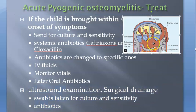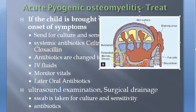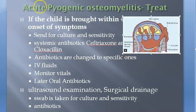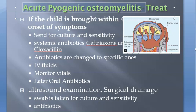If the child has come late, you perform an ultrasound examination and do surgical drainage of all the pus. Whatever has drained, you take a swab for culture sensitivity again and give appropriate antibiotics. This is the treatment for acute pyogenic osteomyelitis.